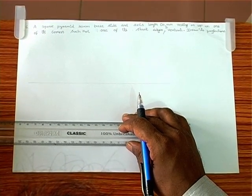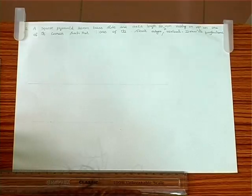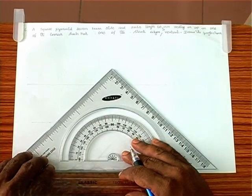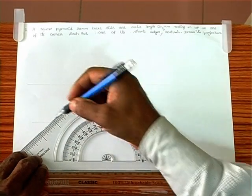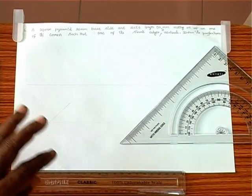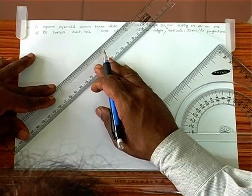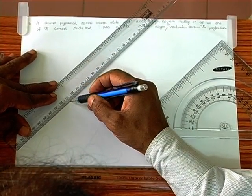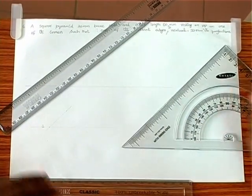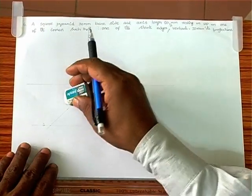Given the solid in corner position, we need to draw the square in corner position. A square in corner position has to be drawn like this — we take this square, draw a 45-degree line through this point. Then we specify the 30mm base side: 10, 20, 30. We have point A.